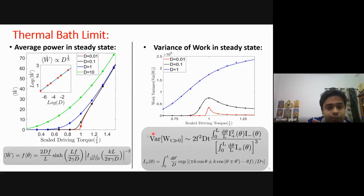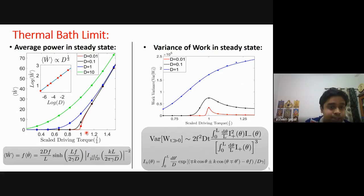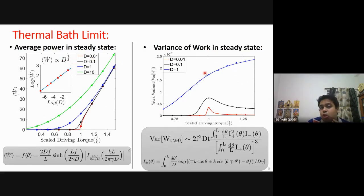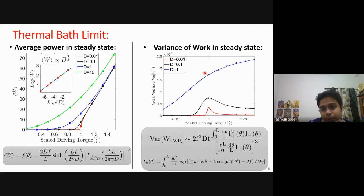As you can see in the figure, we derived an exact expression for the average power input into the system. Even though the noise is Gaussian symmetric, due to the presence of the external torque the system has a constant current, which increases with increasing temperature or increasing diffusion coefficient. We also derived the fact that at the bifurcation point the average power has a scaling behavior: average power proportional to temperature to some power. We also looked at the variance of the work input in the steady state, and for small temperatures we clearly see signatures of the bifurcation in the variance — there are peaks that appear.